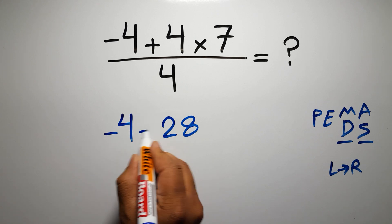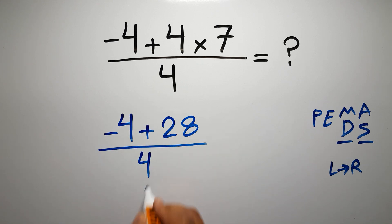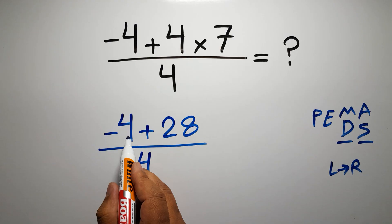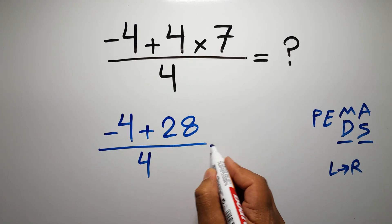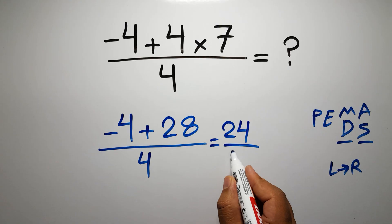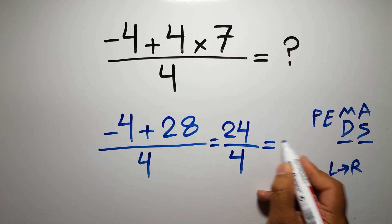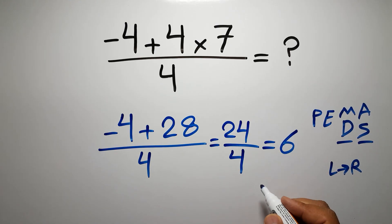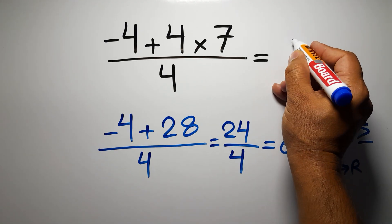So negative 4 plus 28 over 4. Negative 4 plus 28 gives us 24, and 24 over 4 is just 6. And this is our final answer to this problem. The correct answer is 6.